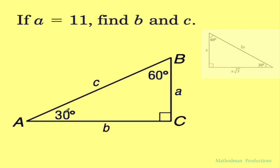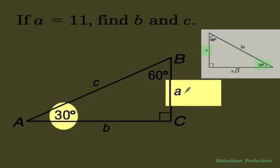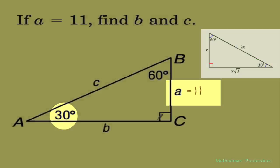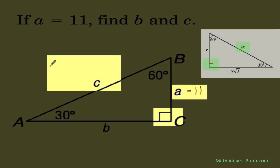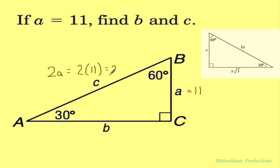Looking at my cheat sheet, the one across 30 is given as a and that's also given to us as 11. Then I know the hypotenuse, the one across 90, is going to be twice the length of whatever a is. So this is given as 2a which is 2 times 11, that comes out to 22.